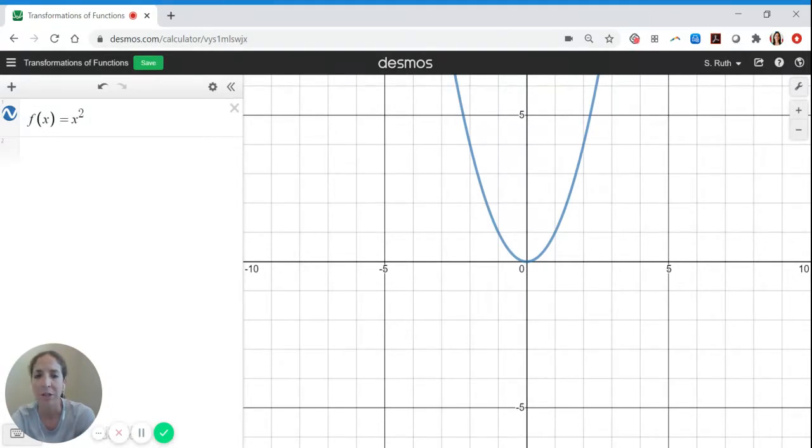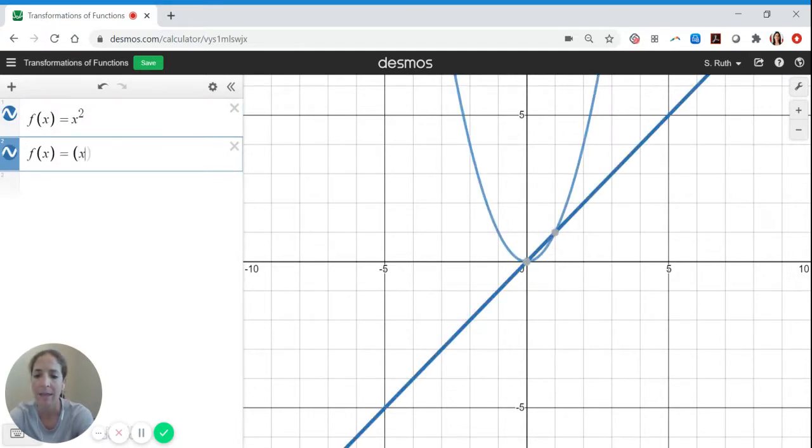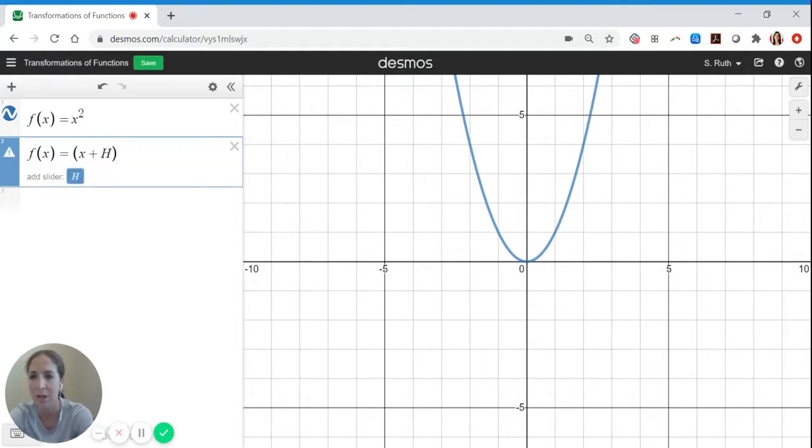So we can make our changes general, or we can make them specific. What I mean by that is, if I take the function and type in a value like plus h inside the parentheses, we know from our work with absolute values what h should be doing, right? Because h is within the parentheses, it's going to cause a horizontal shift, so left-right kind of motion.